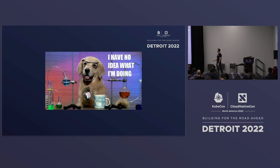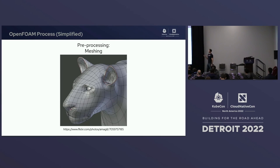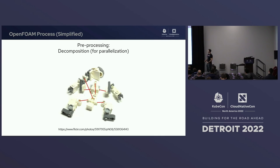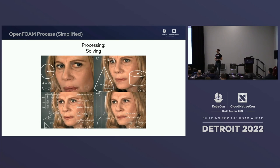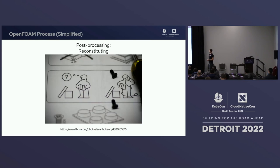What is the OpenFoam process? The first step is meshing: you take a 3D object and break it up into a mesh. Then you decompose this into lots of small jobs — that was the thing we talked about early on. Then you do the problem-solving and figure out what the fluid simulation does.